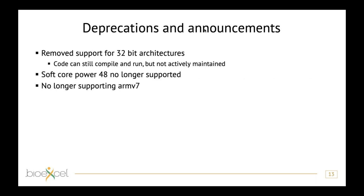Some more announcements: if you're still using 32-bit architecture, GROMACS will still compile and run but we cannot ensure it will continue in the future as we can no longer support that hardware. We removed one part of the free energy code for software power 4/8 that was not used by anything — deprecated in 2020, removed in 2021. We will also stop supporting on NVIDIA hardware where we have maintenance issues with compilers and testing.